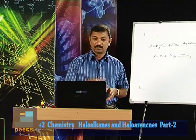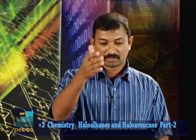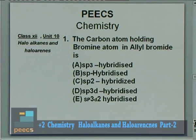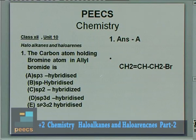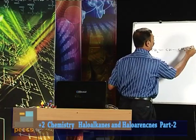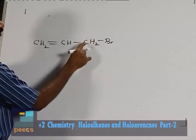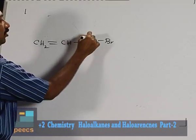Now it is time for discussing some questions based on this. Question 1: The carbon atom holding bromine in allyl bromide is — options are SP³ hybridized, SP², SP³D, and SP³D². You know allyl halides: in allyl bromide (CH₂=CH–CH₂Br), the two carbons of the double bond are SP² hybridized and the carbon bearing the bromine is SP³.